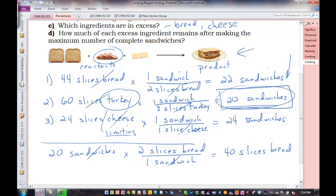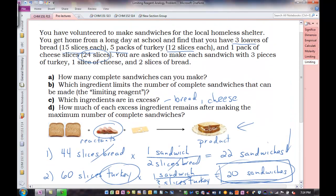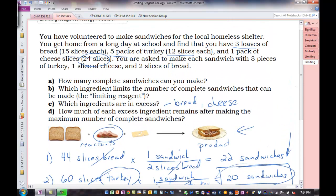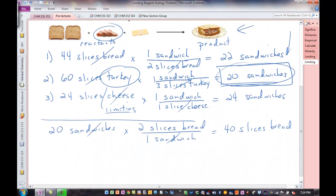That's how much we need to make those 20 sandwiches. How many slices of bread did we start with? Probably remember, it wasn't 44. Remember, I went to 44 because I knew I needed an even number. But we had three loaves at 15 slices each, so we started with 45. We used 40 slices to make those sandwiches. So we had 45 slices of bread to start, 40 reacted. We have five slices of bread remaining.